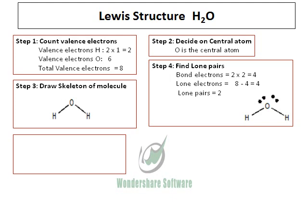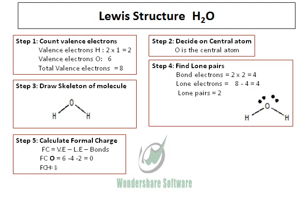The next step is to calculate the formal charge. The formula we use is: valence electrons minus lone electrons minus bonds. For oxygen, we have 6 valence electrons, 4 lone electrons, and 2 bonds, therefore the formal charge is 0. The formal charge on hydrogen is also 0, because it has no lone pair and just 1 bond.